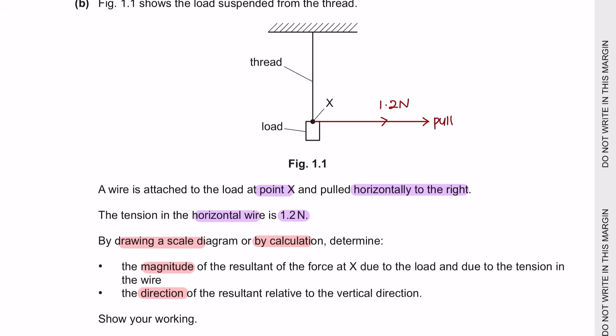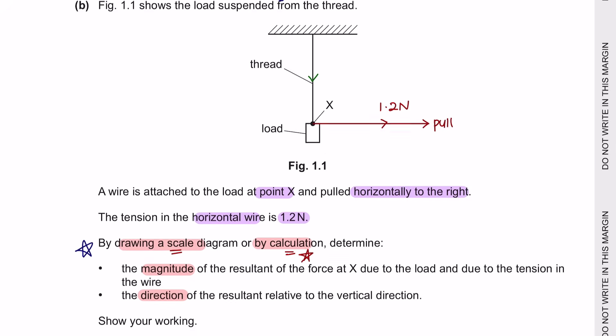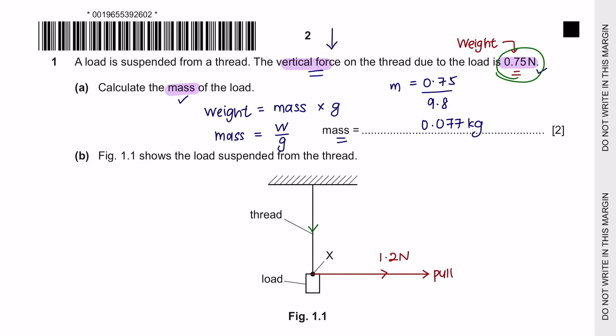You have the option to either draw a scale diagram or calculate. Since I'm solving this on my iPad, I'll choose calculation. So we have two forces: one acting vertically downwards at 0.75 newtons, and another acting to the right at 1.2 newtons.